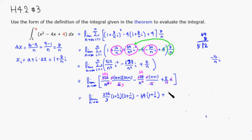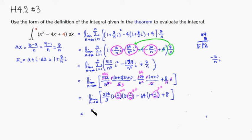And then plus 8. As n approaches infinity, all the 1/n terms go to 0. So we get 256/3 times 1 times 2 = 512/3, minus 64, plus 8.